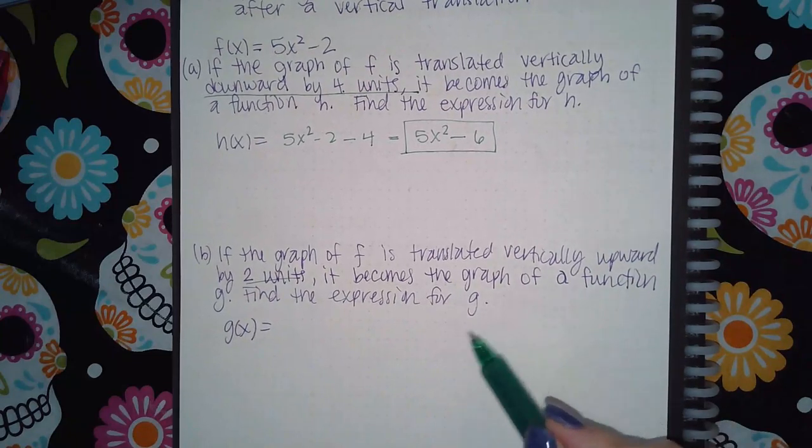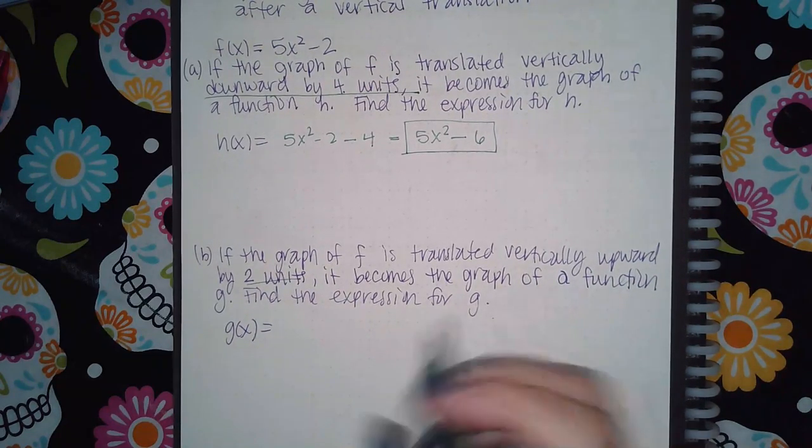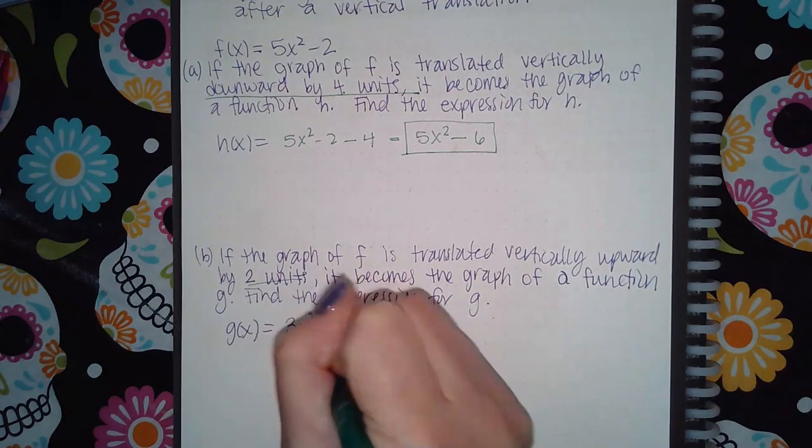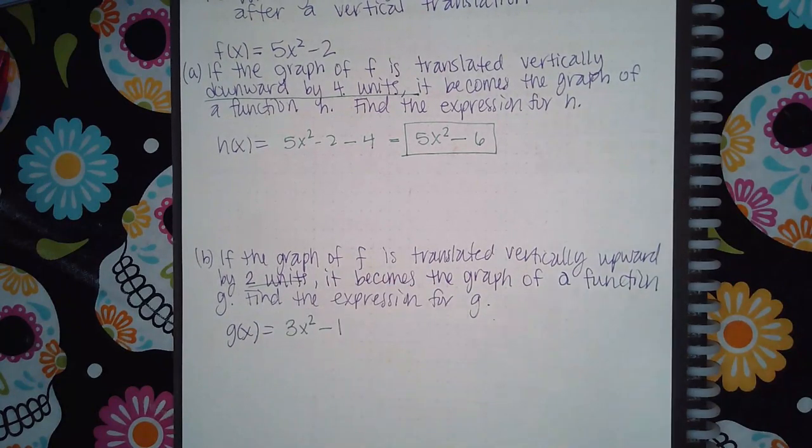So we're taking this function here, and outside the square we're going to minus 4. Which means the equation is going to be 5x² - 6 if I combine my like terms.